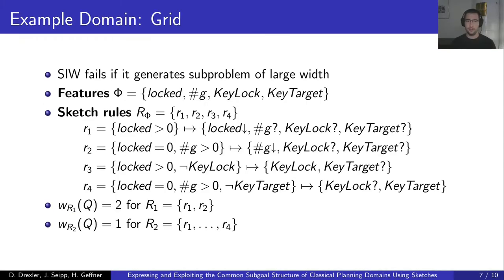Let us look at an example sketch for the Grid domain. In the Grid domain, we are given a grid of places. A robot, a set of keys, and a set of locks are distributed over the grid. The robot can move around except for places that contain a closed lock. If the robot is standing next to a closed lock and holds the correct key, it can open the lock, making the place available. The objective is to move keys to respective target locations, possibly having to open locks to make more places available. The SIW algorithm fails because it generates sub-problems of large width—for example, it moves a key to a target location but later has to pick up that key to open a closed lock.